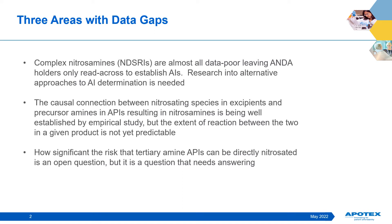Third, tertiary amine APIs are more numerous than secondary amine APIs, which we are well aware of being susceptible to nitrosation. Though direct nitrosation of tertiary amines is known in the chemical literature, the reaction conditions are quite forcing for this to occur. However, research into the extent of nitrosation of tertiary amine APIs under typical drug product manufacturing processes is warranted.